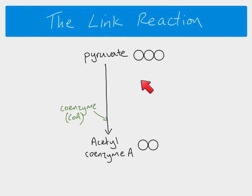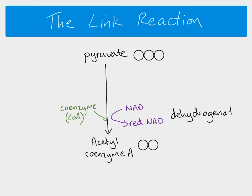As we go from pyruvate to acetyl coenzyme A, NAD gets reduced — hydrogen from our pyruvate combines with NAD, so the pyruvate loses hydrogen. When NAD is reduced, that's dehydrogenation; the pyruvate has been dehydrogenated. We've also gone from a three carbon to a two carbon molecule, meaning carbon has been lost, so carbon dioxide is given off and decarboxylation has taken place — the pyruvate has been decarboxylated. This whole process is our link reaction.